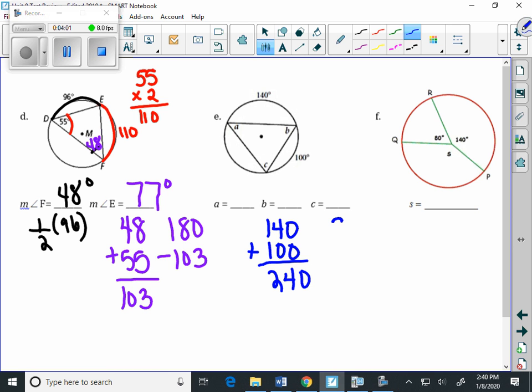And then we can take 360 and subtract the 240, and we get 120, which is how big this missing arc is.